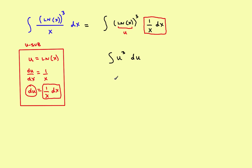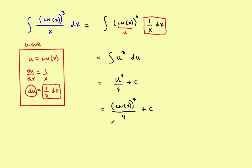Finding the anti-derivative using the power rule gives u to the fourth divided by four, plus c. The last step is to replace u with what it's equal to: u equals the natural log of x. So the final answer is the natural log of x quantity to the fourth power, divided by four, plus c. Notice that in this first problem, you let u equal the natural log of x, but it wound up being a power rule problem.